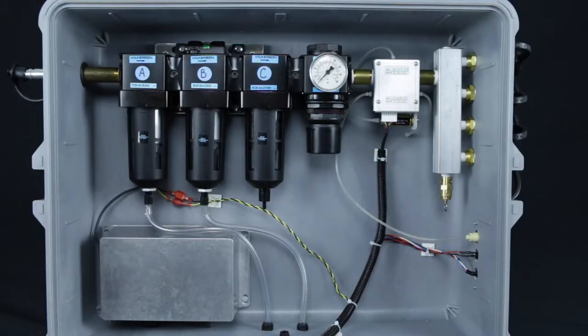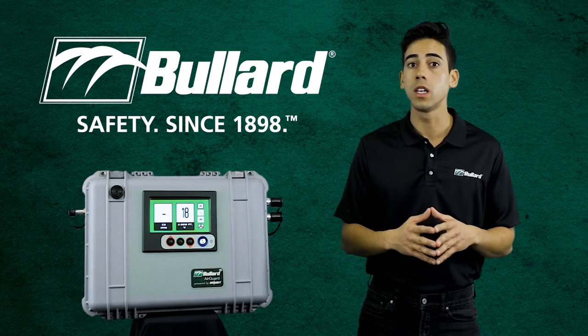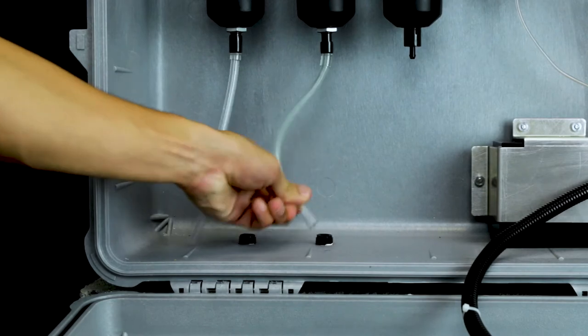Each of these filter bowls are easy to remove. Before replacing the filters, disconnect Position A and B's drain tubes by pulling on the Tigon tubes.